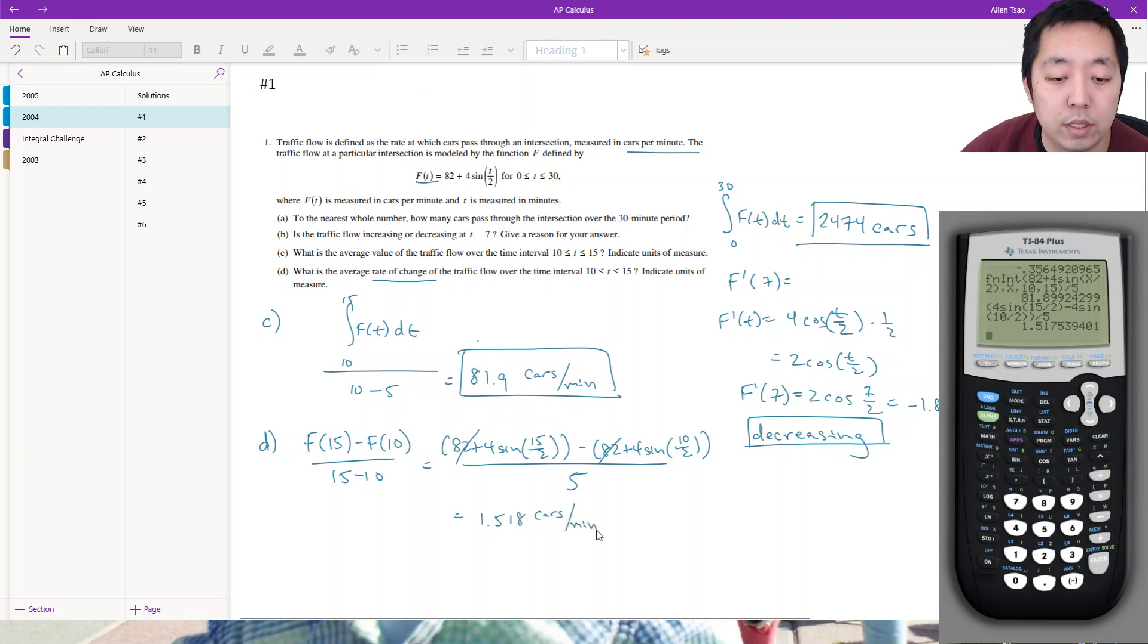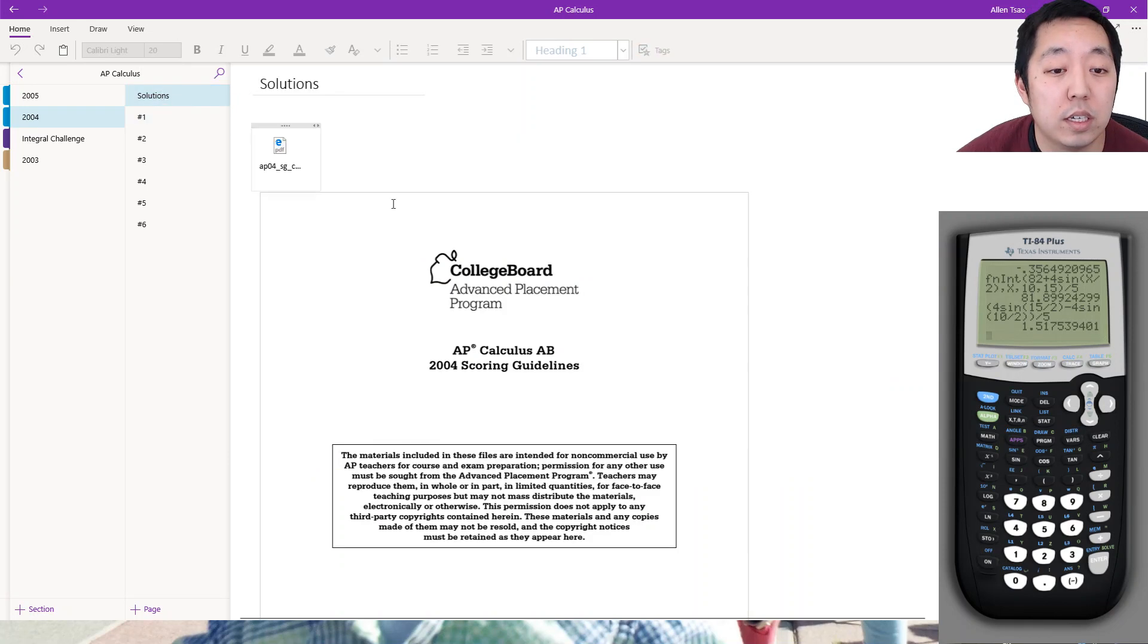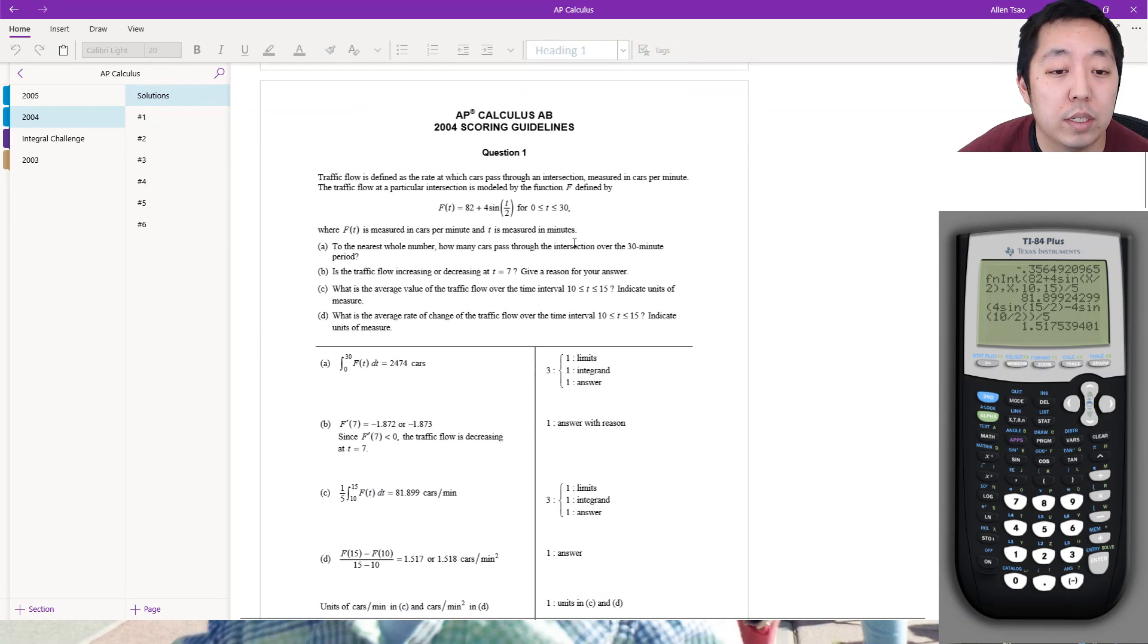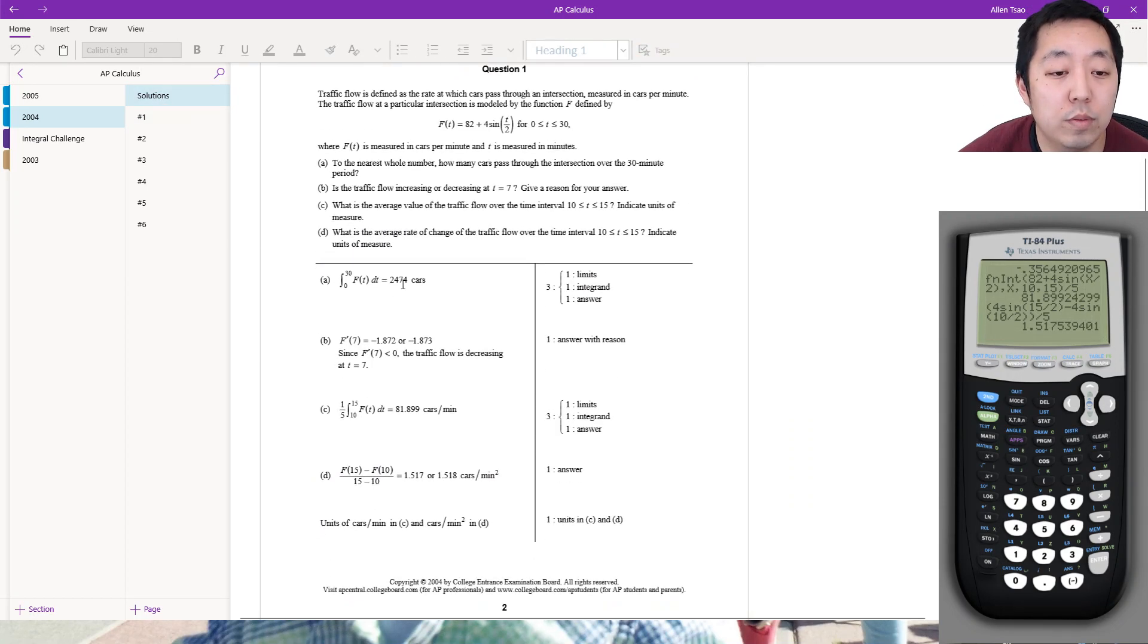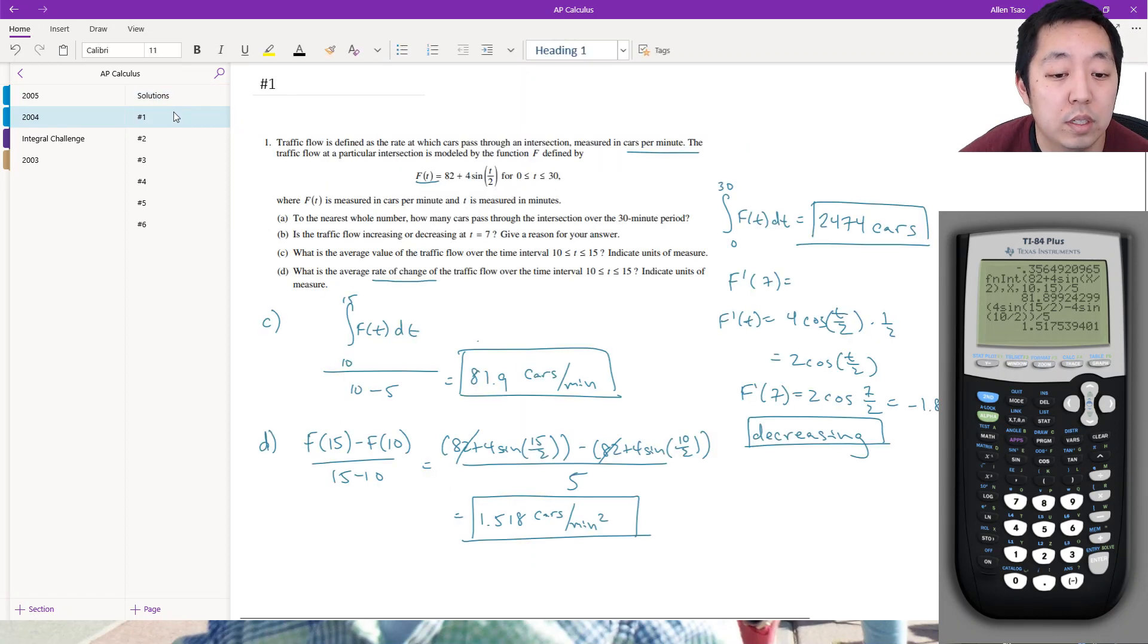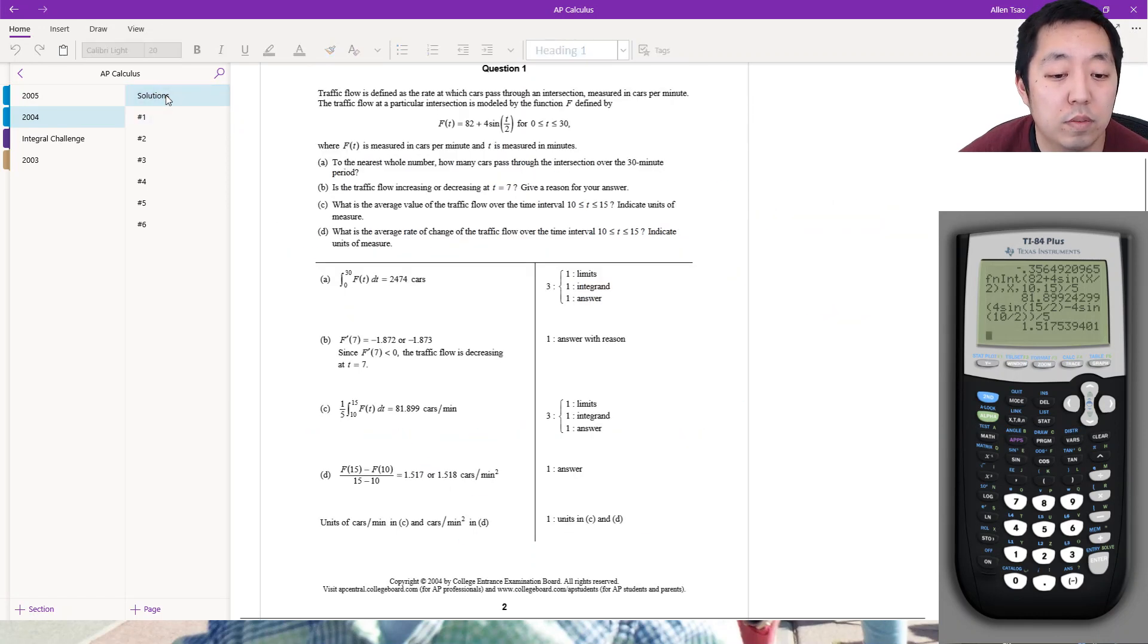Let's take a look at the solutions and see how it compares. 2,474 cars—correct. Negative 1.873, it's negative so the traffic was decreasing, so my hand derivative was correct. 81.899—I did 0.9. And 1.517 cars per minute squared. So everything is good on that.